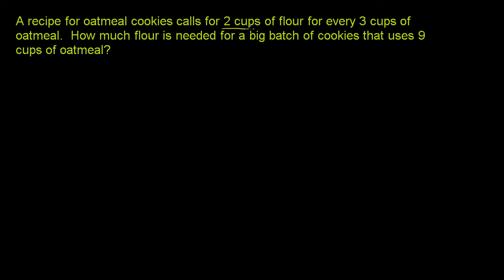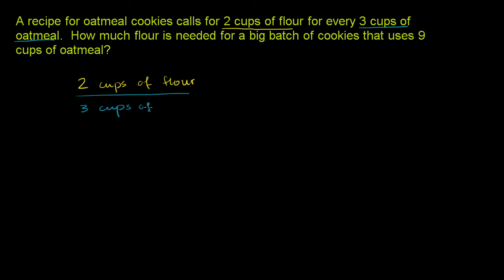So let's think about what they're saying. They're saying two cups of flour for every three cups of oatmeal. And now they're asking how much flour is needed for a big batch of cookies that uses nine cups of oatmeal. So now we're going to go to a situation where we are using nine cups of oatmeal.